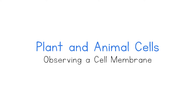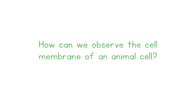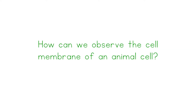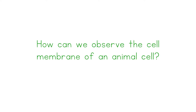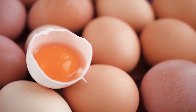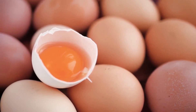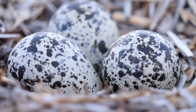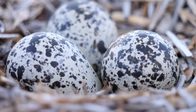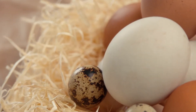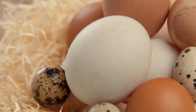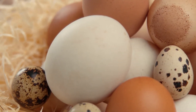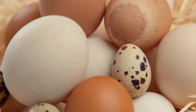Plant and animal cells. Observing a cell membrane. How can we observe the cell membrane of an animal cell? Chicken eggs and the eggs of most animals are in fact giant single cells. To protect them from the environment, the cells have a hard outer shell made from calcium carbonate.